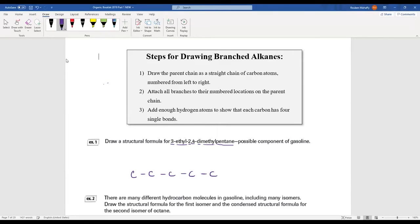Let's number them so that we don't lose track of which one is which. Then we can add our branches. We've got an ethyl on carbon number three—I know the ethyl needs to have two carbons in it—and I've got a methyl on carbon two and another methyl on carbon four. It doesn't matter if they go up or down; I'm going to put the methyls going down just so that it doesn't get as crowded.